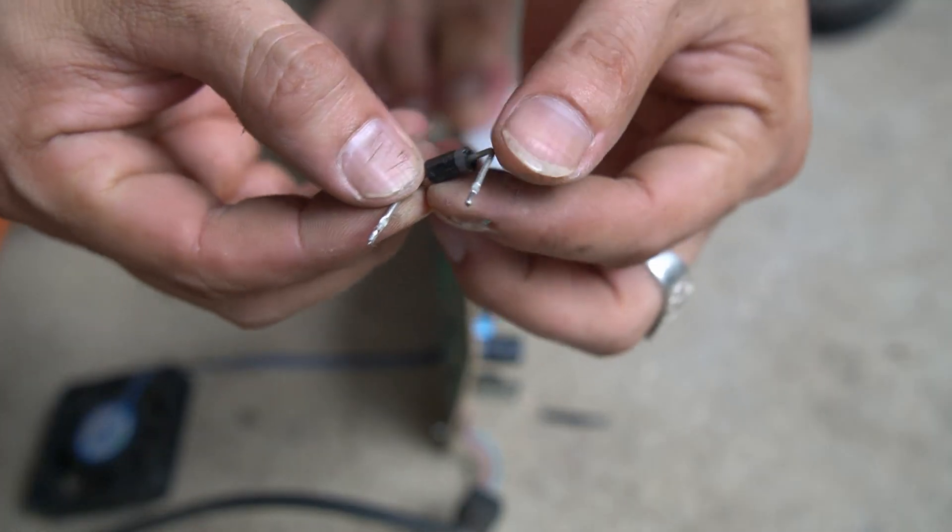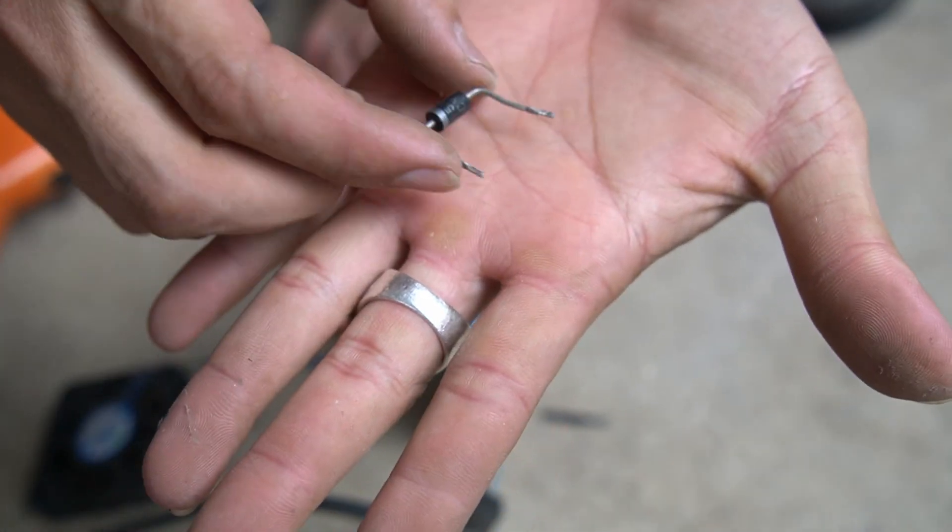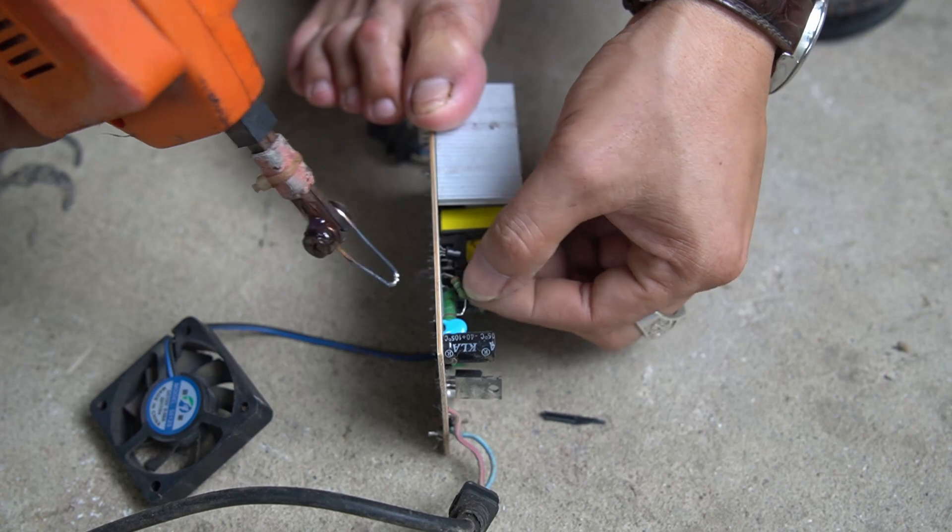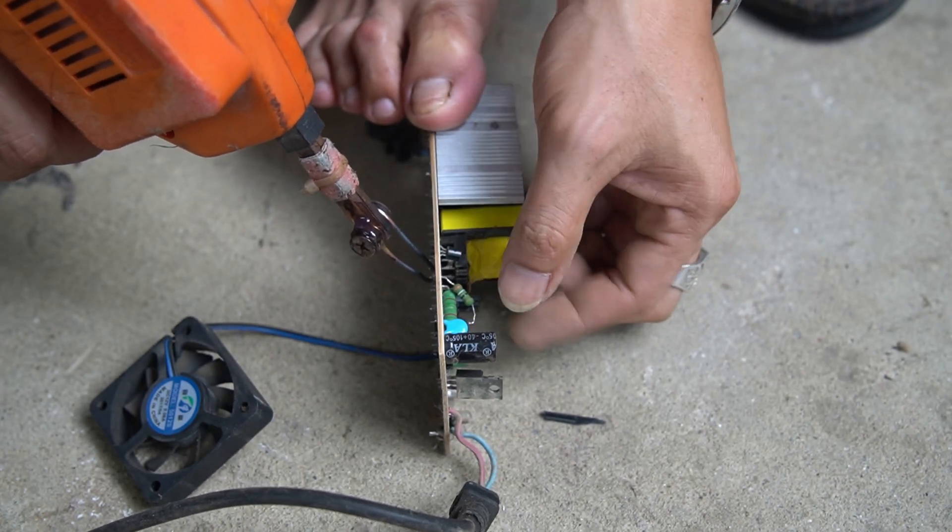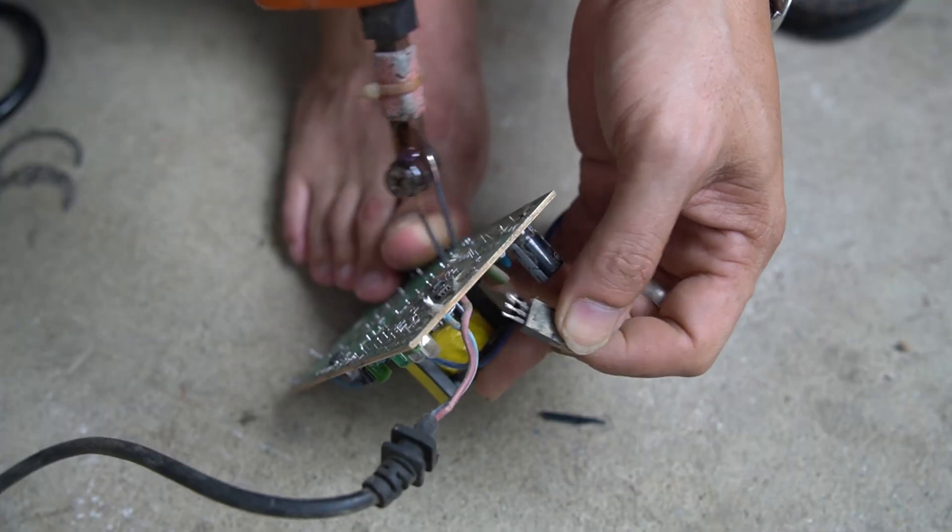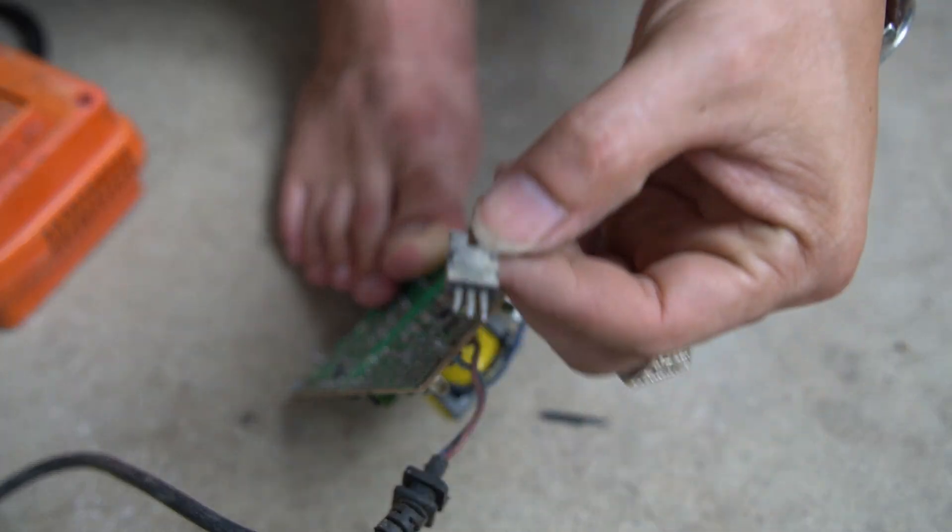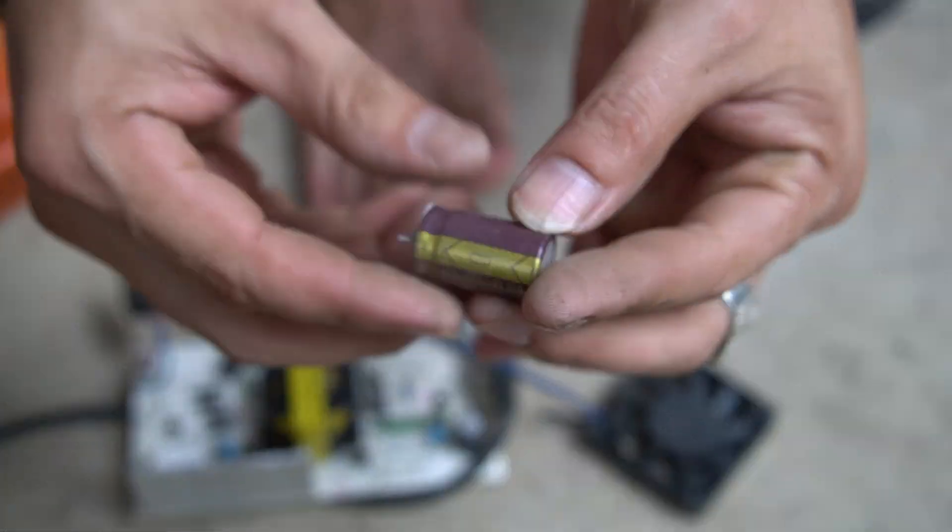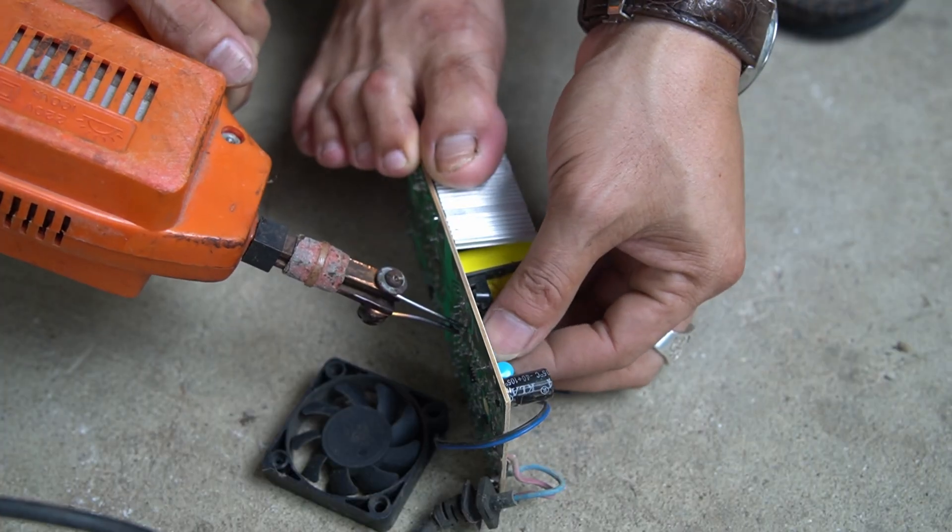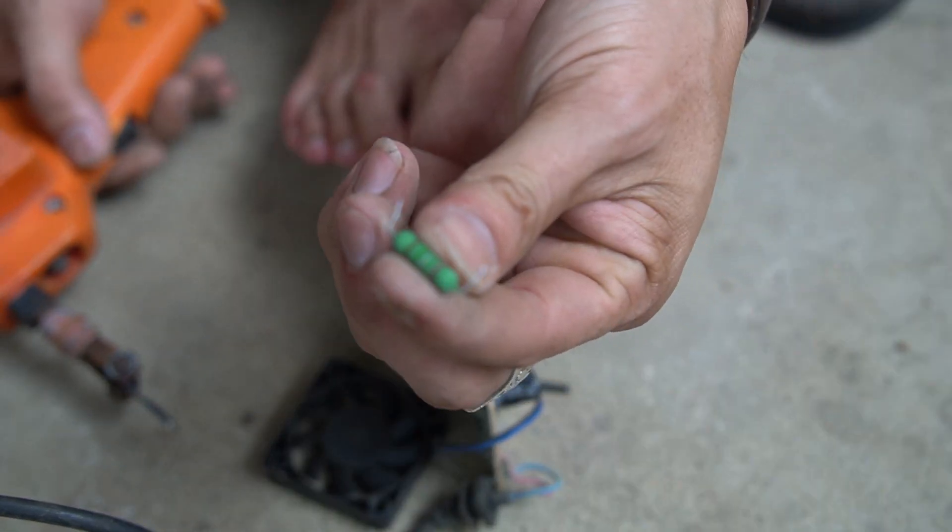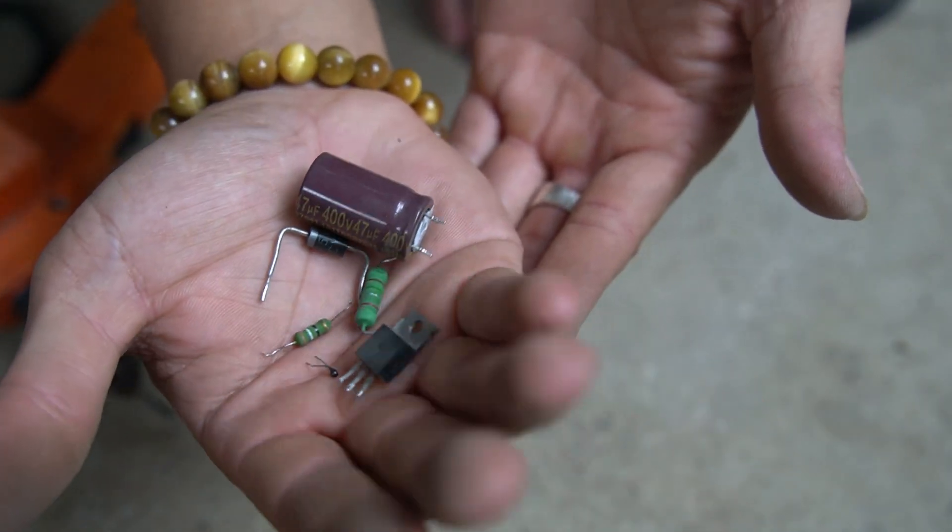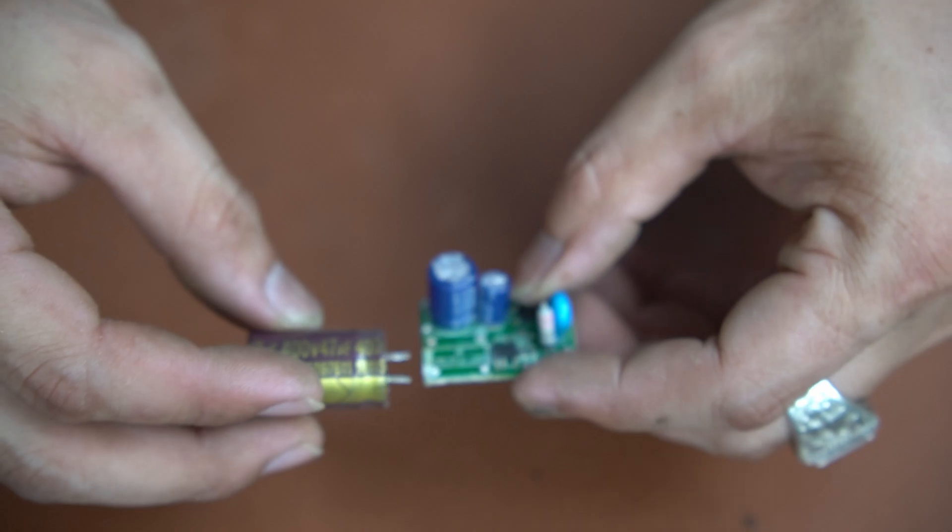Next I use a computer fan. The fan is wider than the bulb, so I used a saw to cut off the excess. Before cutting I had to mark it. Now the fan is circular, so the fan fits perfectly with the light bulb cover.